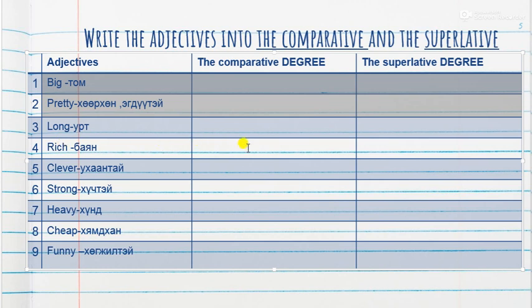Rich — richer — the richest. Clever — cleverer or more clever — the cleverest or most clever. Both forms are possible. Strong — stronger — the strongest.